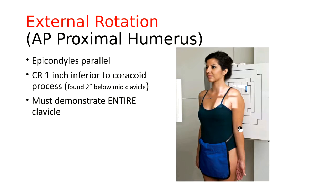The coracoid process is extremely uncomfortable to palpate — there's not much skin over it. The central ray is one inch below or inferior to the coracoid process, which is somewhat difficult to palpate. A helpful landmark: find the patient's mid-clavicle and go two inches below that, which places you one inch below the coracoid process, since the coracoid is found approximately one inch below mid-clavicle.